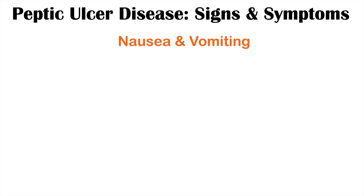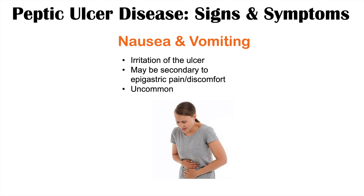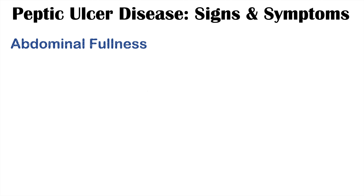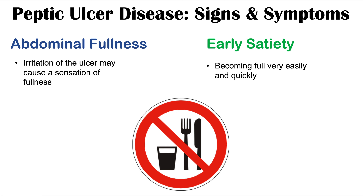Patients with peptic ulcer disease can also have nausea and vomiting, due to irritation of the ulcer or secondary to epigastric pain. However, nausea and vomiting is uncommon in peptic ulcer disease. Individuals may also complain of a sensation of abdominal fullness due to irritation of the ulcer. Related to this is early satiety — patients can become full very quickly and easily. They may feel hungry, start eating, and get full much sooner than anticipated.